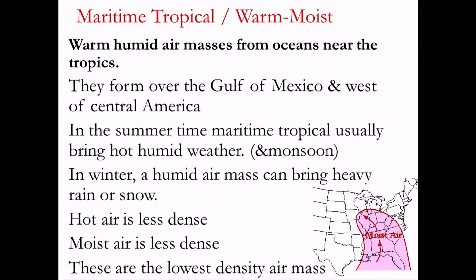Maritime tropical forms over the ocean, and tropical means it's warm. The name of the air mass can tell you its temperature and humidity — so maritime tropical would be warm and moist. For the United States, maritime tropical air masses are found in the Gulf of Mexico and in the Pacific off the coast of California and Baja California. During the summer, these warm, moisture-laden air masses can bring hot, humid weather to the southern United States. During wintertime, they can bring humid and slightly warmer weather.